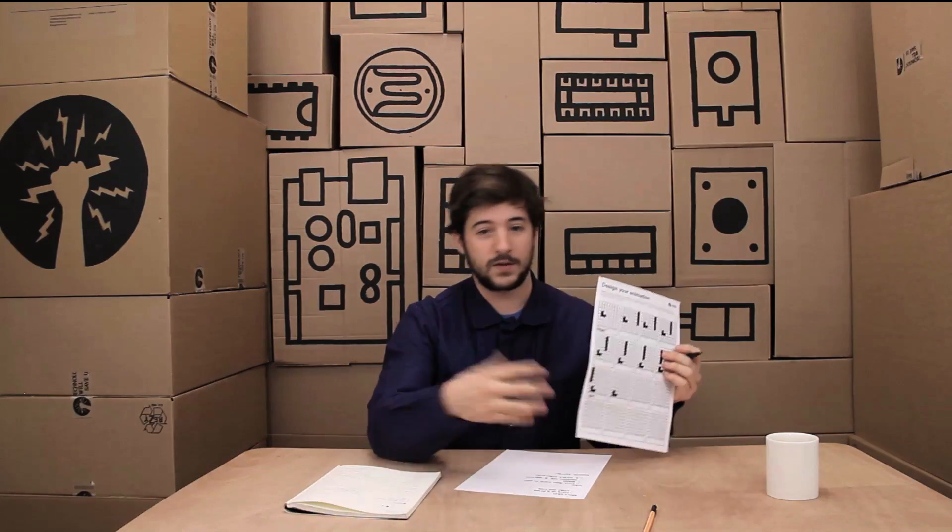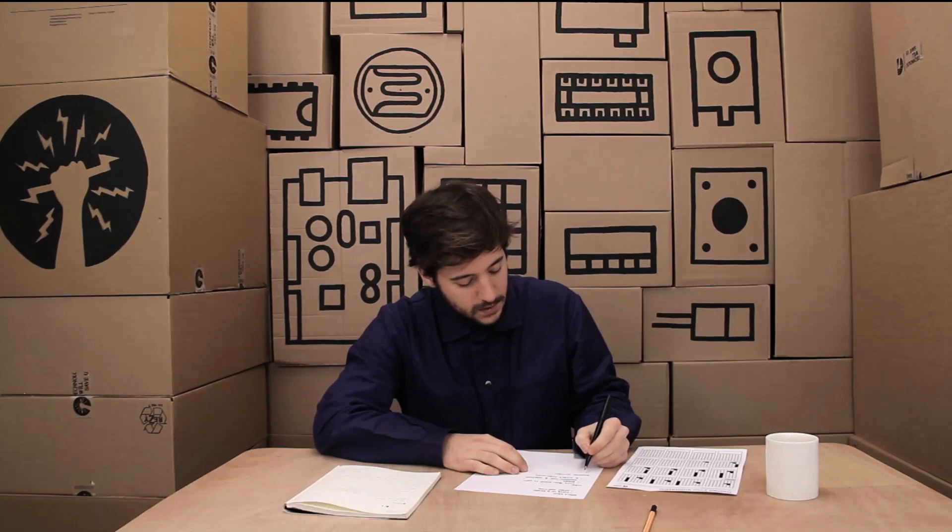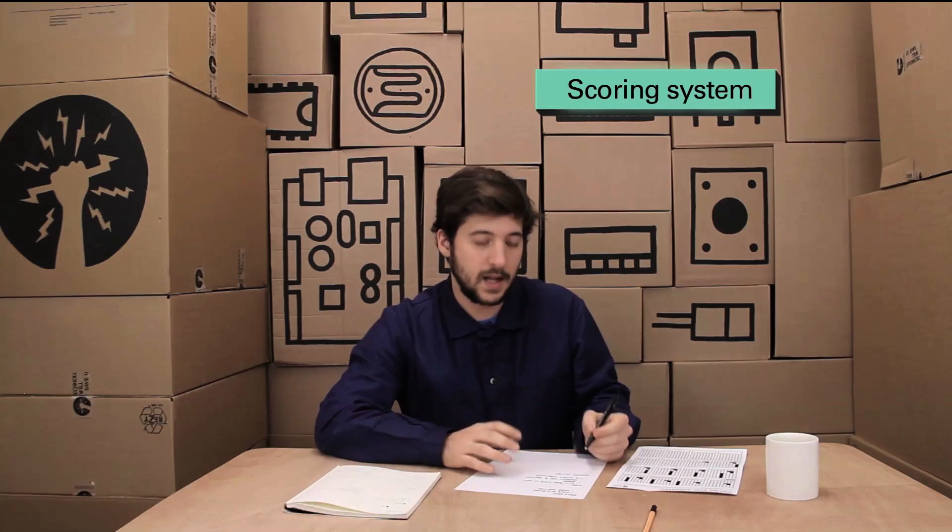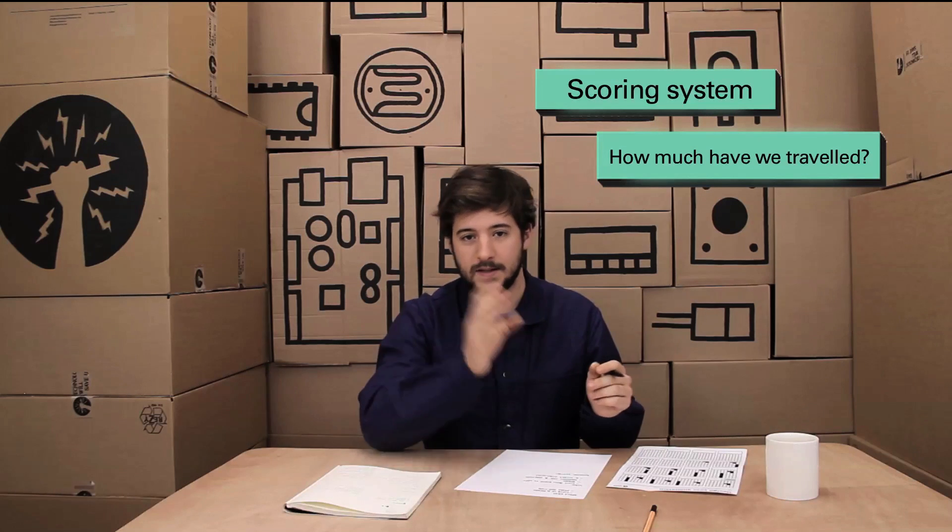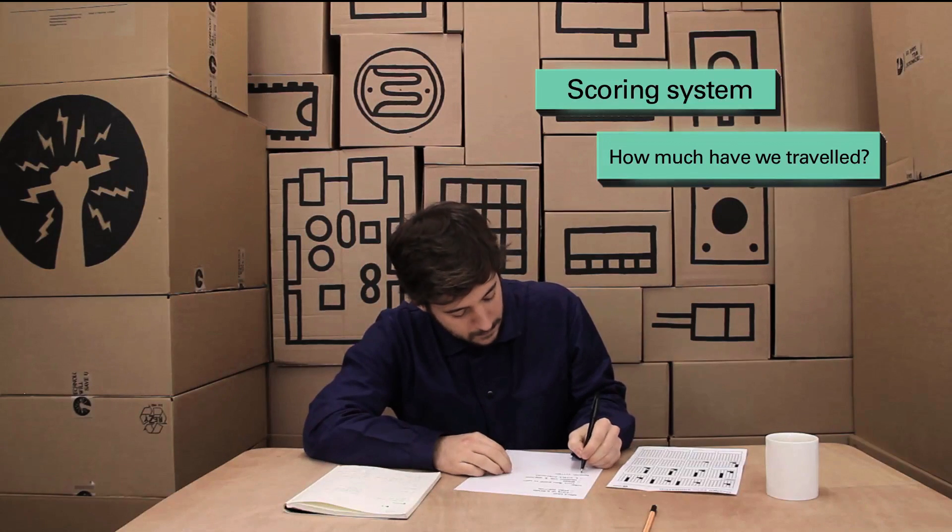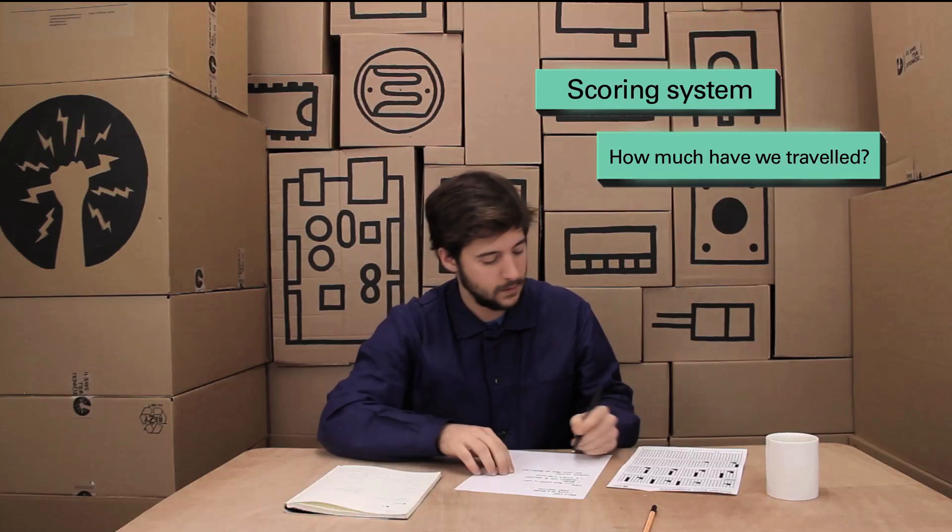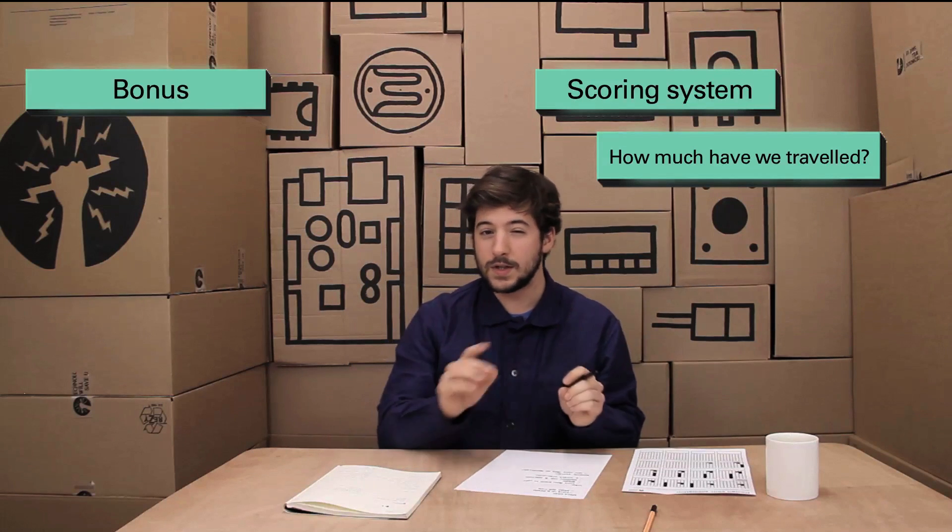The scoring system needs to be able to tell how many meters, how many eights of pixels we've gone past.